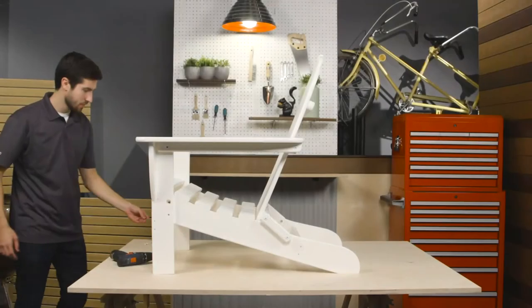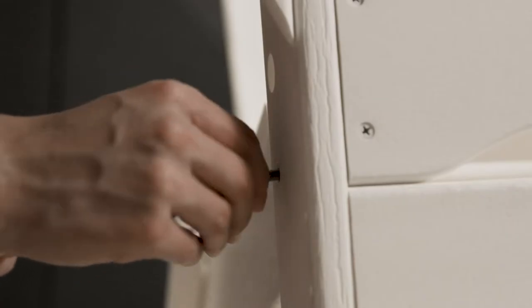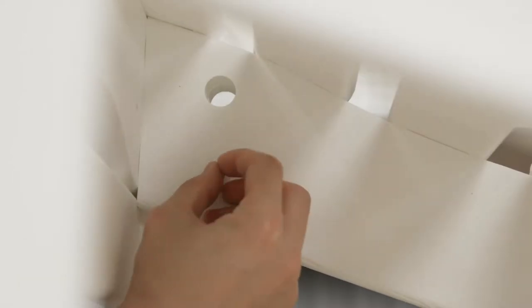Next, attach the seat to the front legs using two 1-7-8 inch bolts, two 1-4 inch washers, and two 1-4 inch nylock nuts.